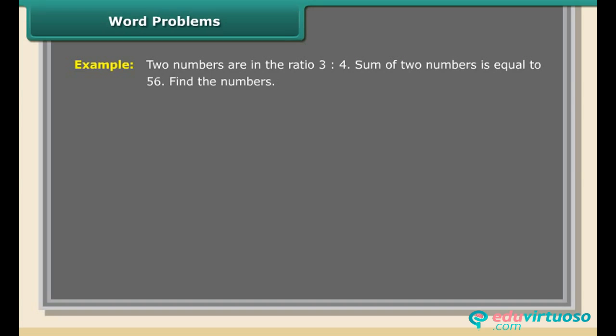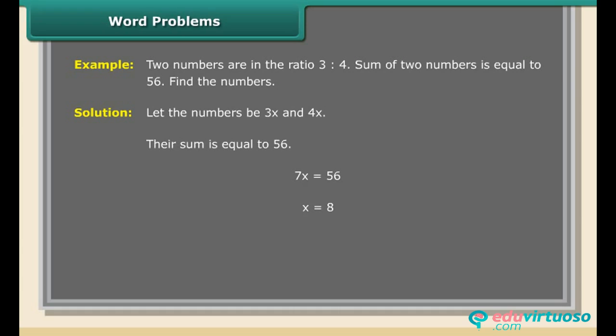Example 4: Two numbers are in the ratio 3:4 and their sum is 56. Find the numbers. Solution: Let the numbers be 3X and 4X. 7X = 56; X = 8. The numbers are 3 × 8 = 24 and 4 × 8 = 32.